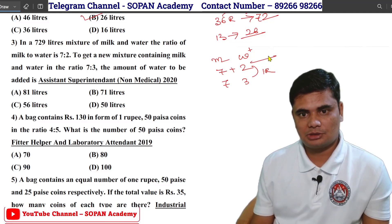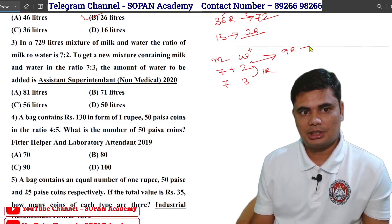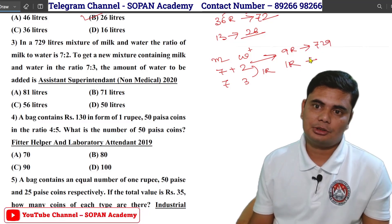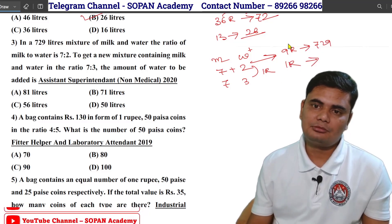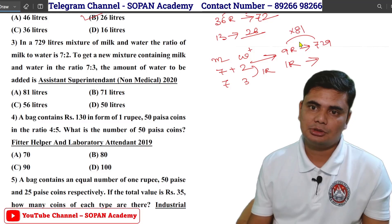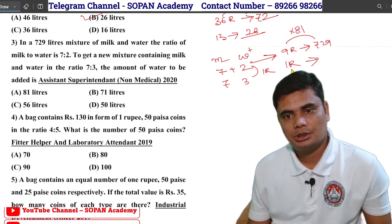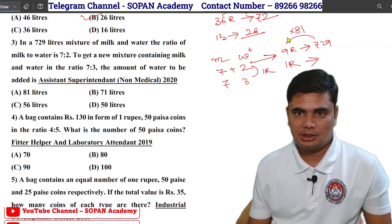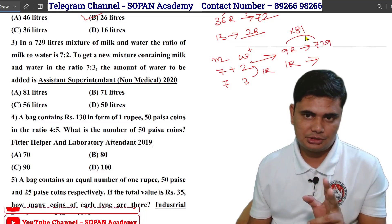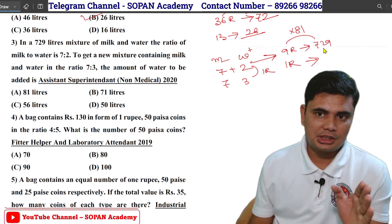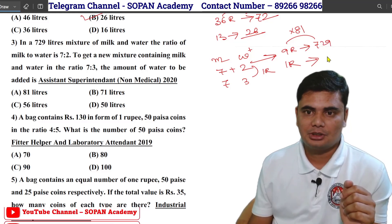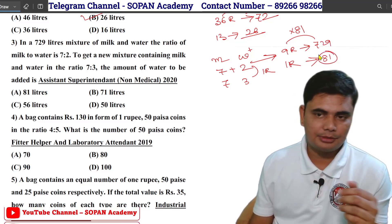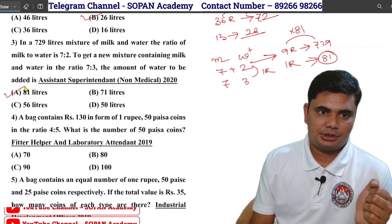Total ratio is 1 plus 2 is 9 ratio. 9 ratio is 7 to 9, so 1 ratio is 7 to 9. So this is 81. We have 1.8. Option A.